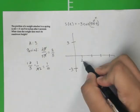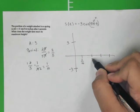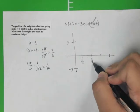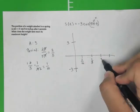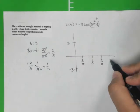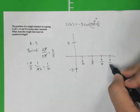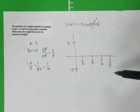So this is 1 tenth. This is 2 tenths, which is 1 fifth. This is 3 tenths. And then 4 tenths, which is 2 fifths. And this is where it would actually complete one period of the graph.